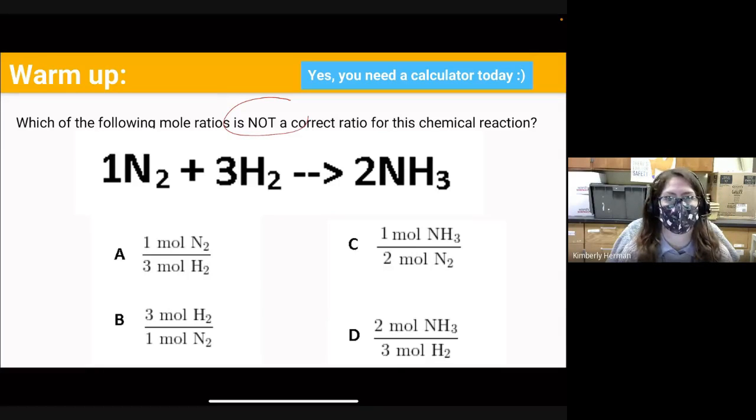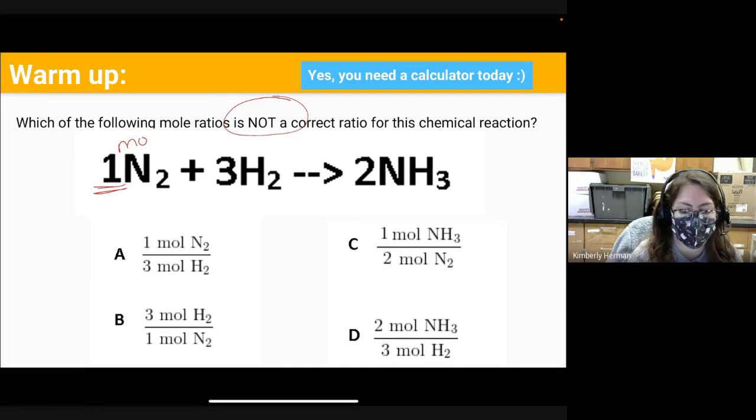Remember that our mole ratios come from our coefficients. So this would mean that we have 1 mole of N₂, 3 moles of H₂ yielding 2 moles of NH₃.